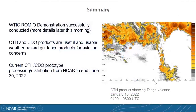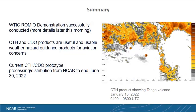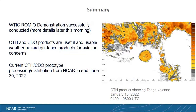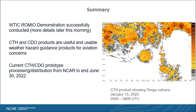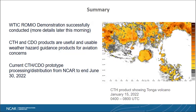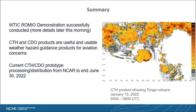The Romeo demonstration was successfully conducted, and we'll hear more about that later. CTH and CDO products are useful, usable, and being used as weather hazard guidance products for aviation. The current CTH/CDO prototype processing and distribution system from NCAR is going to end at the end of June, so we need to talk about what happens after that.